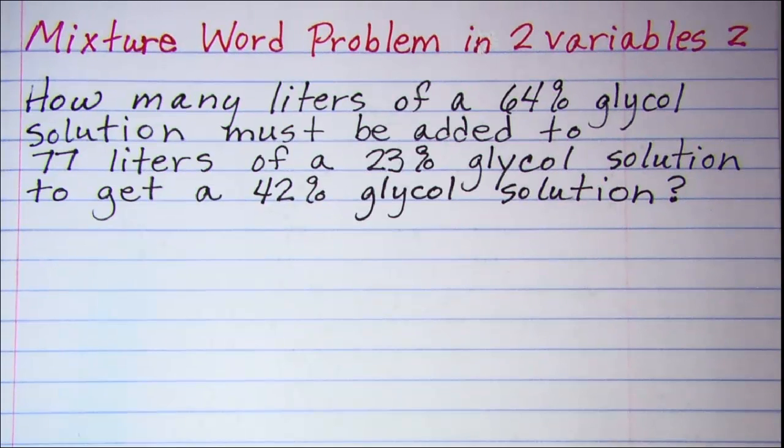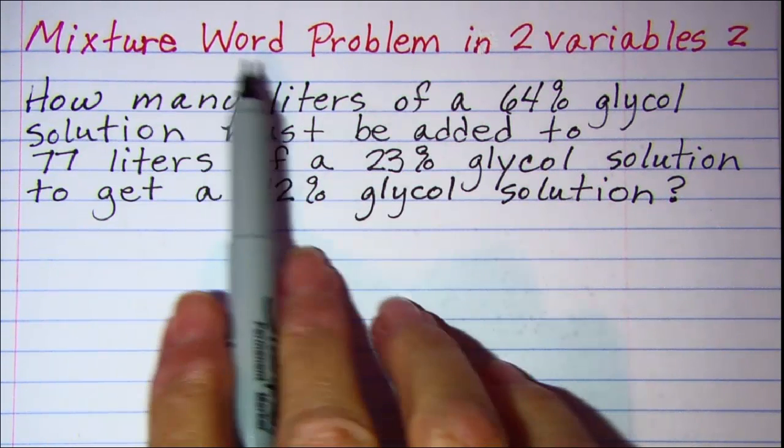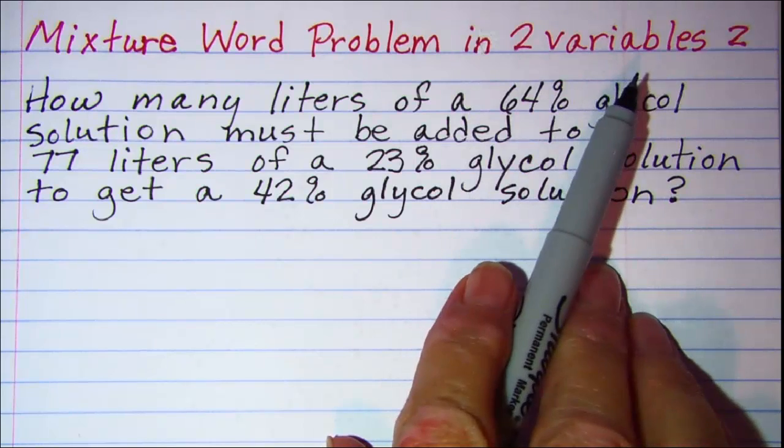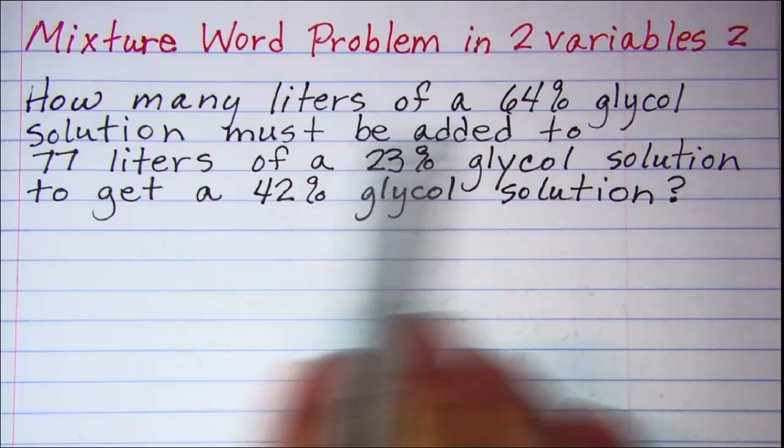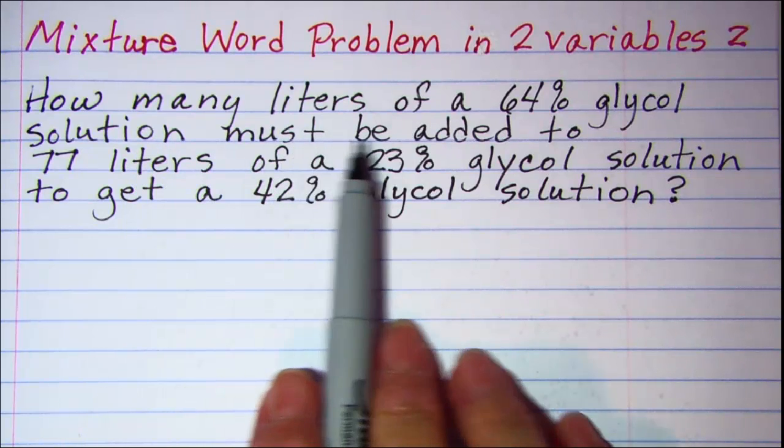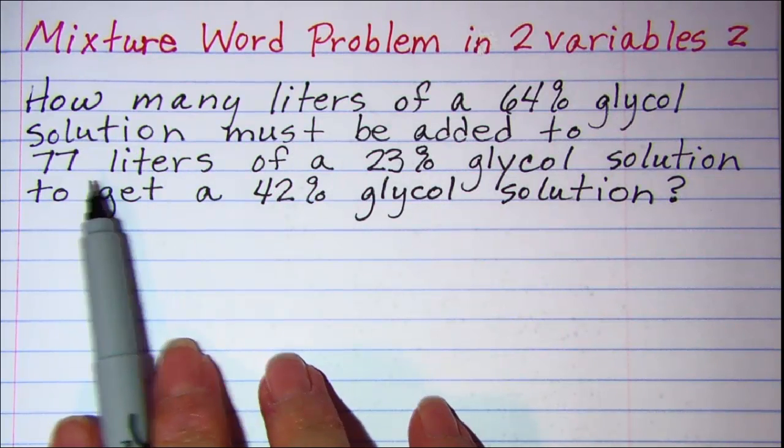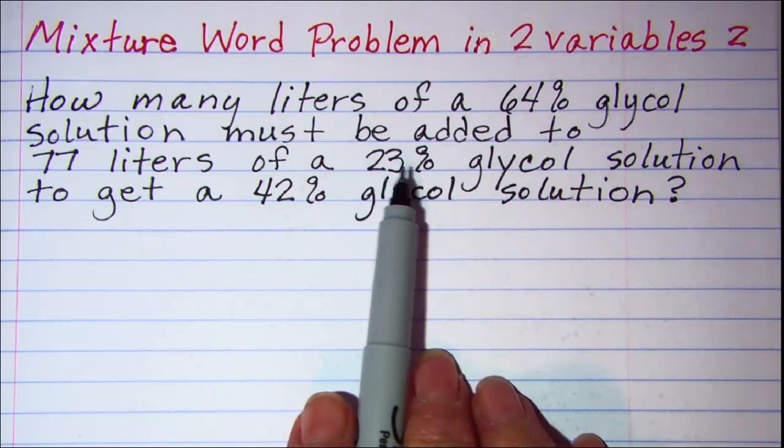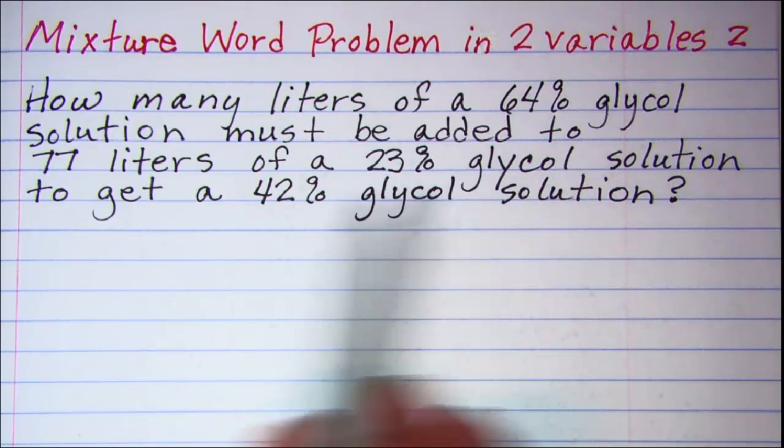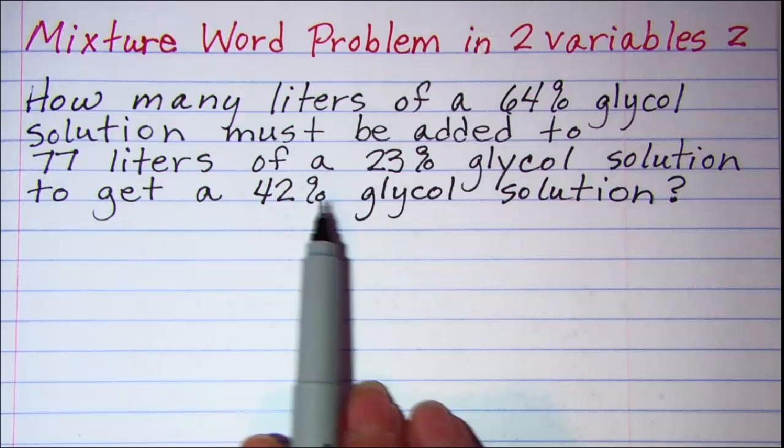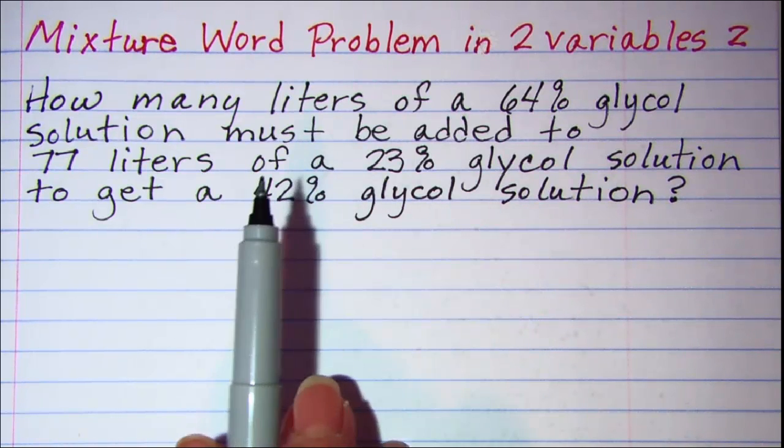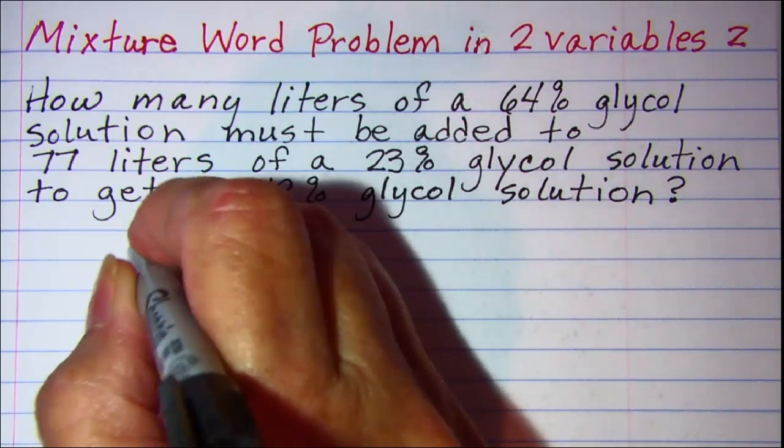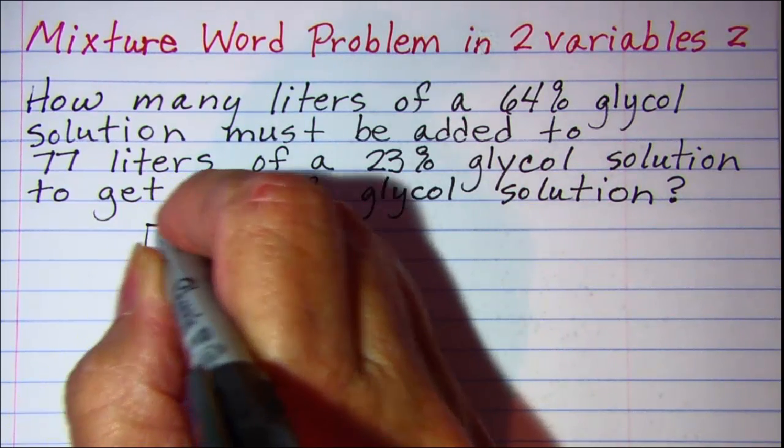In this video we'll be doing another mixture word problem in two variables. How many liters of a 64% glycol solution must be added to 77 liters of a 23% glycol solution to get a 42% glycol solution? Now whenever I do a mixture word problem I'd like to first set up